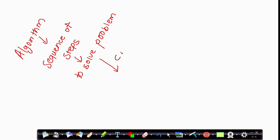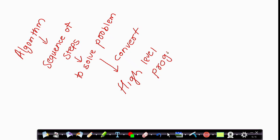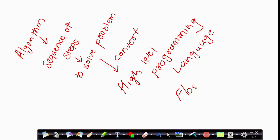We then convert this algorithm into a high-level programming language. You can represent your algorithm in two different ways: one is a flowchart and another is pseudocode.